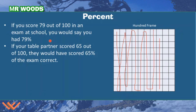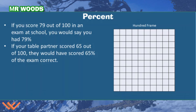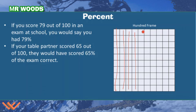Let's look at another example. If your table partner scored 65 out of 100, they would have scored 65% of the exam correct. Counting up 60 squares and then 5 more — so that's 65% of that 100 frame is covered. That's what they scored correctly.